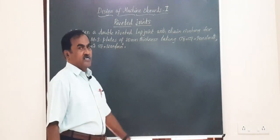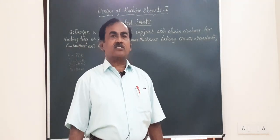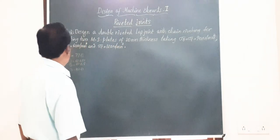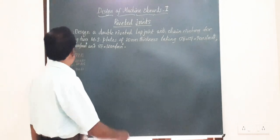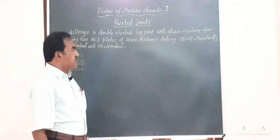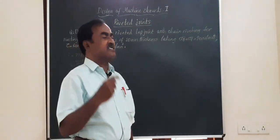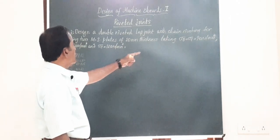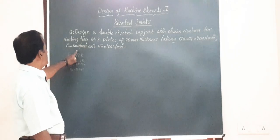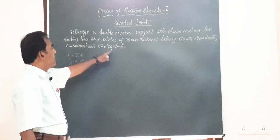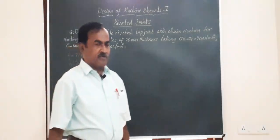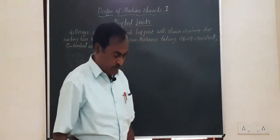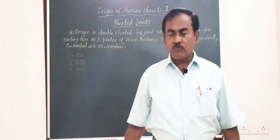In today's session we have a problem on the design of a lap joint which is double riveted and the arrangement of rivets is by chain riveting. The problem states: design a double riveted lap joint with chain riveting for riveting two mild steel (MS) plates of 20 mm thickness, taking tensile stress = 90 N/mm², shear stress = 60 N/mm², and compressive stress = 120 N/mm².